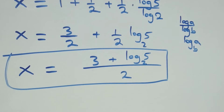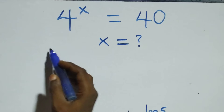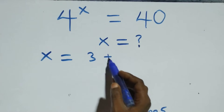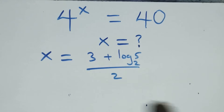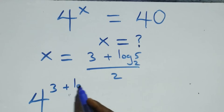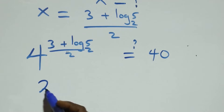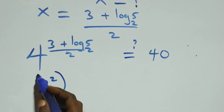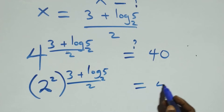Let's check if this satisfies the given problem. We substitute x equals 3 plus log 5 base 2 all over 2 back into the equation. We get 4 raised to the power of 3 plus log 5 base 2 all over 2, equals 40. We express 4 as 2 squared, raised to the power 3 plus log 5 base 2 all over 2, equals 40.